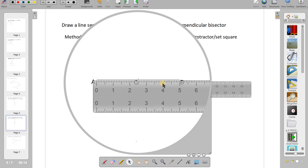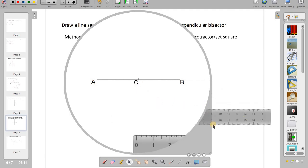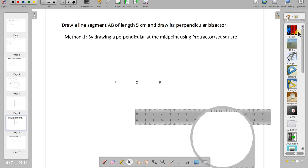So, from either A or the end B, C is at 2.5 cm. So, C is the midpoint I have marked. Now, I'll take the protractor and do it.